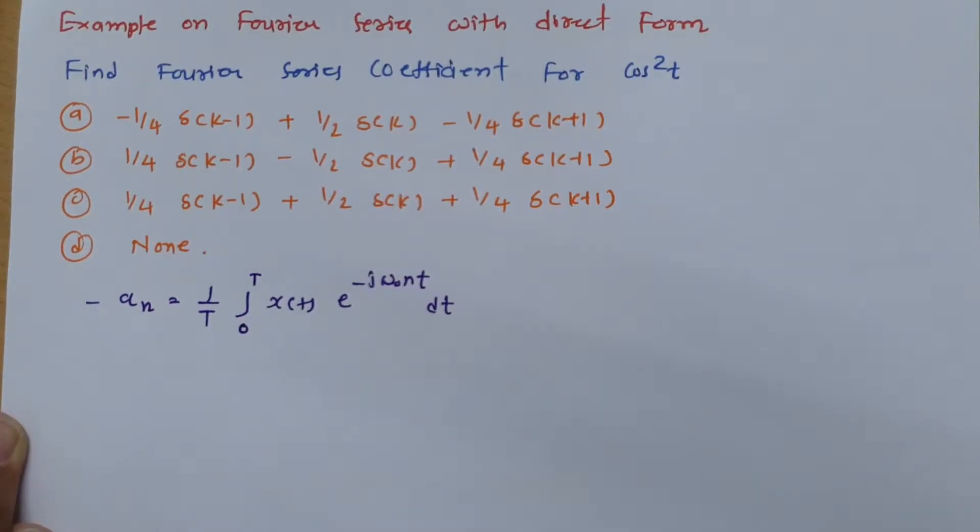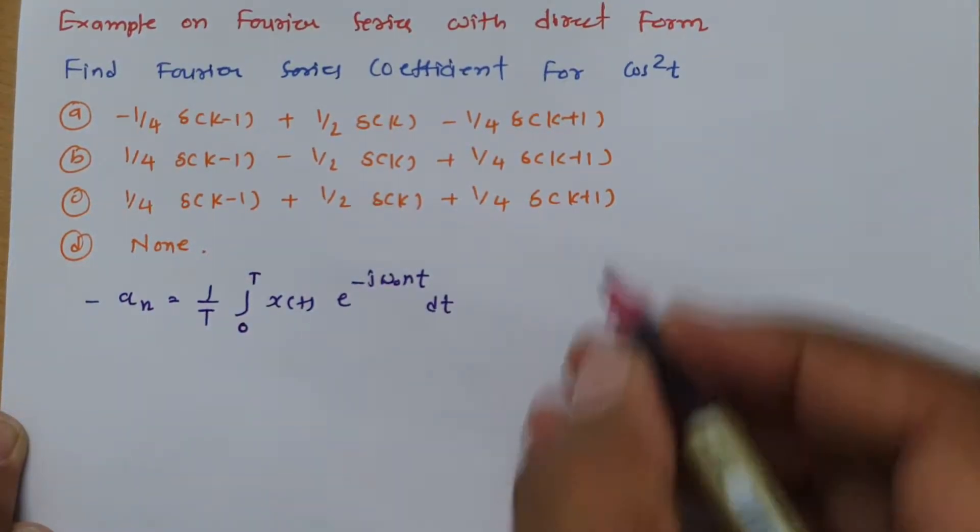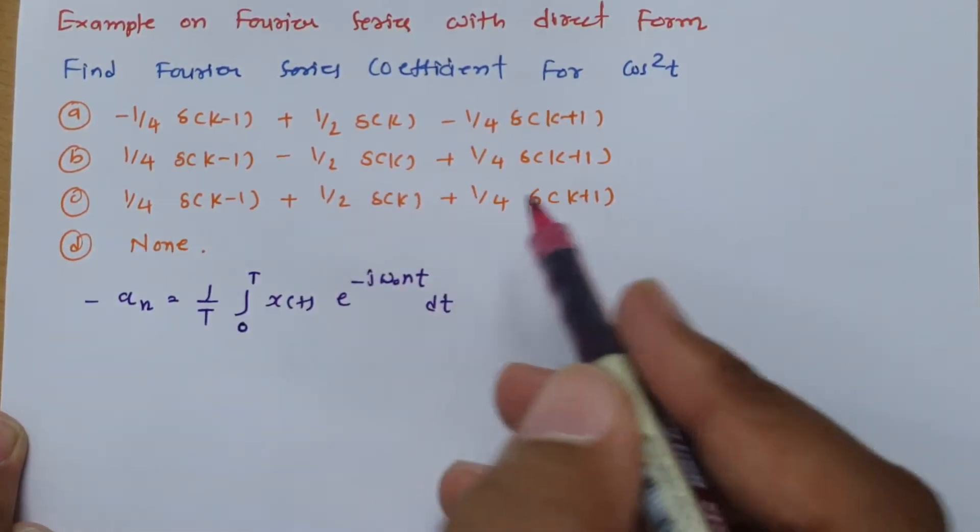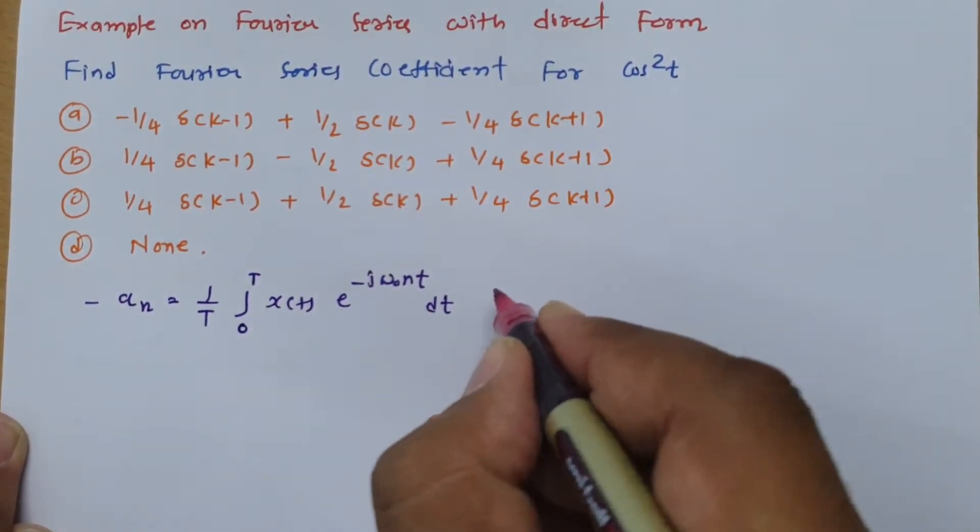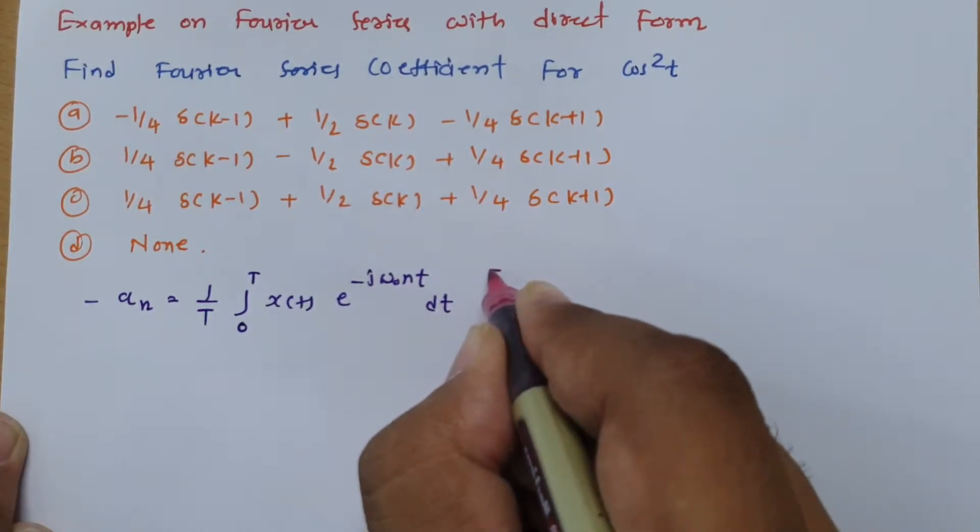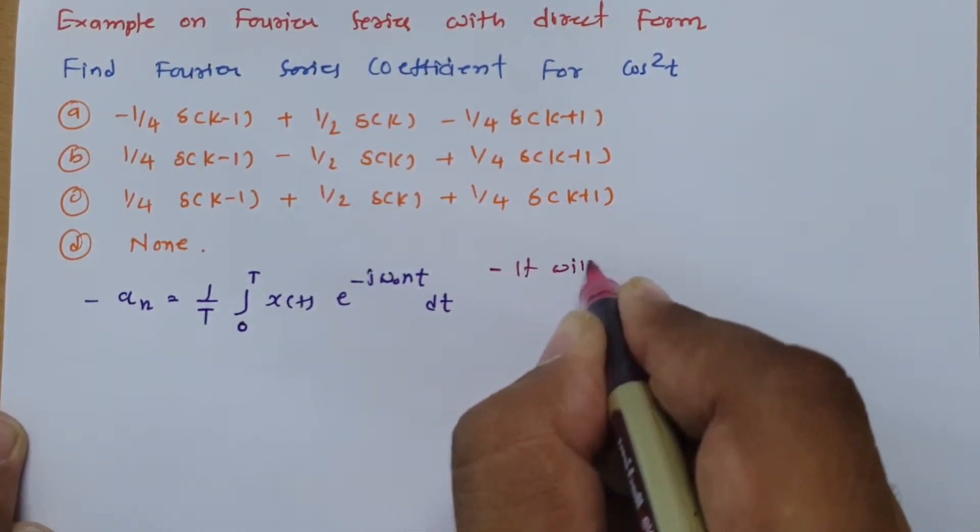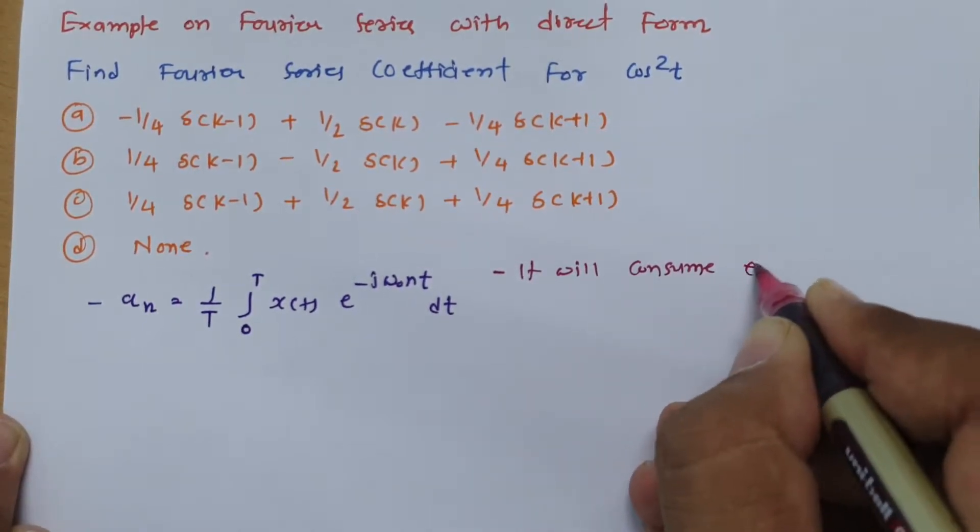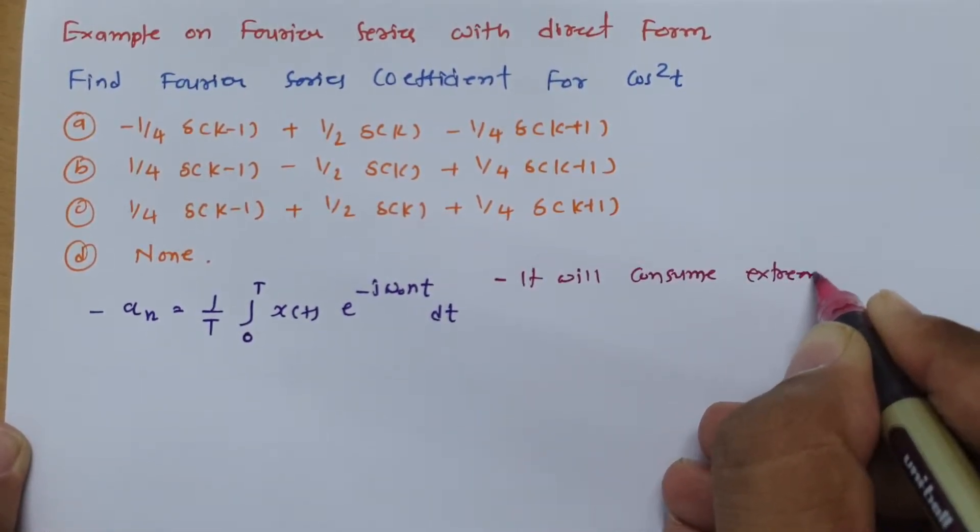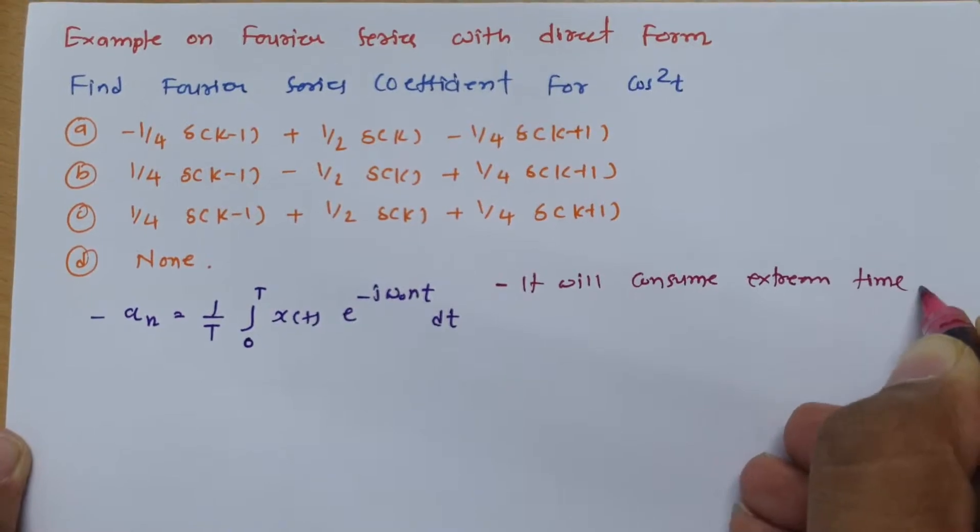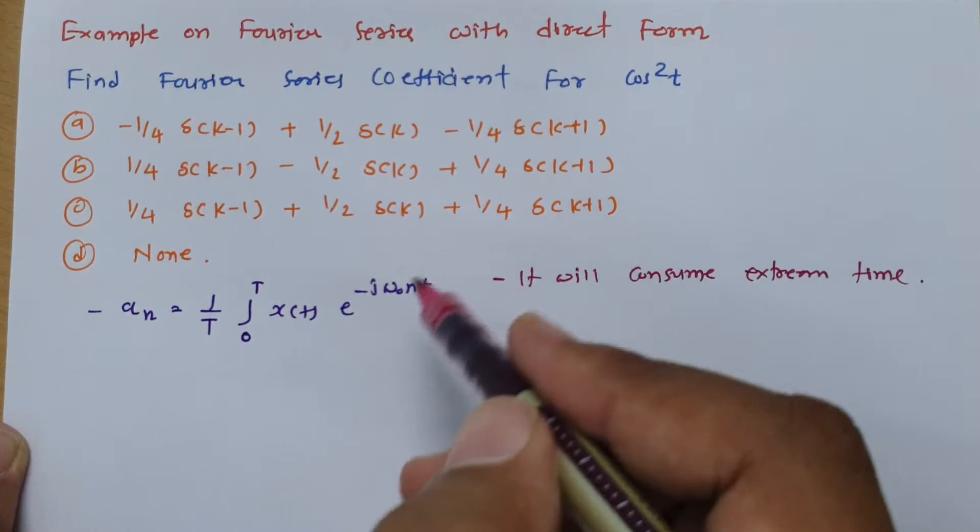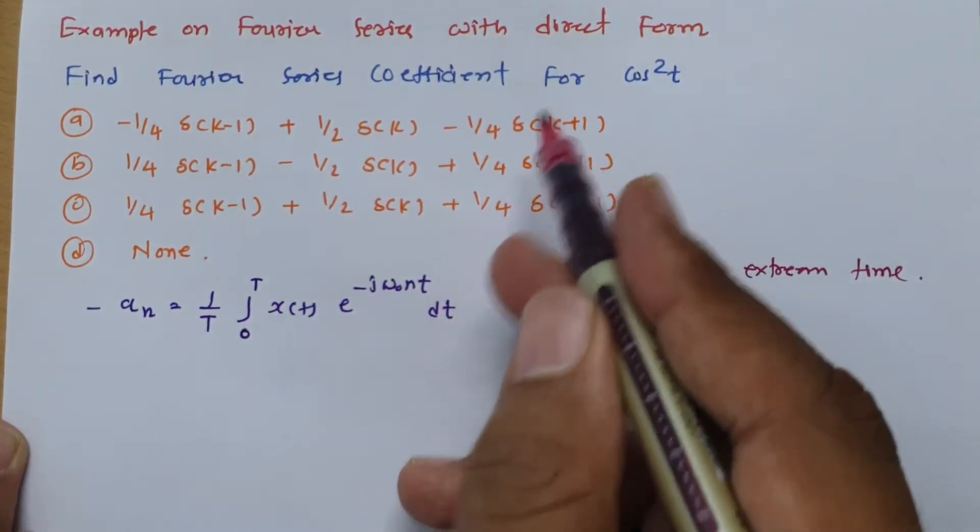But if you see cos²t, then calculation of coefficient, so that will be very long way of calculation. So it will consume extreme time. So I don't prefer this way to calculate this type of problem. It is very easy problem.